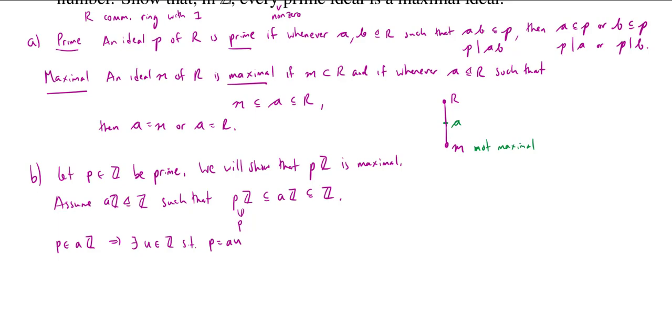such that P is equal to AU. But P is prime, and I've just written it as a product. So since P is prime, and I've written it as a product, I know one of the factors is a unit. Since P is prime, A or U is a unit. So there's two cases. So what if A is a unit?